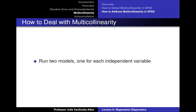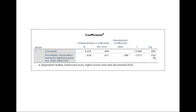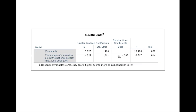One very simple way to deal with multicollinearity is to run two separate regression models, one for each independent variable. I ran two models — one with GDP per capita as the independent variable and one with poverty as the independent variable. In both models, the coefficients are now significant, which supports my original expectations.